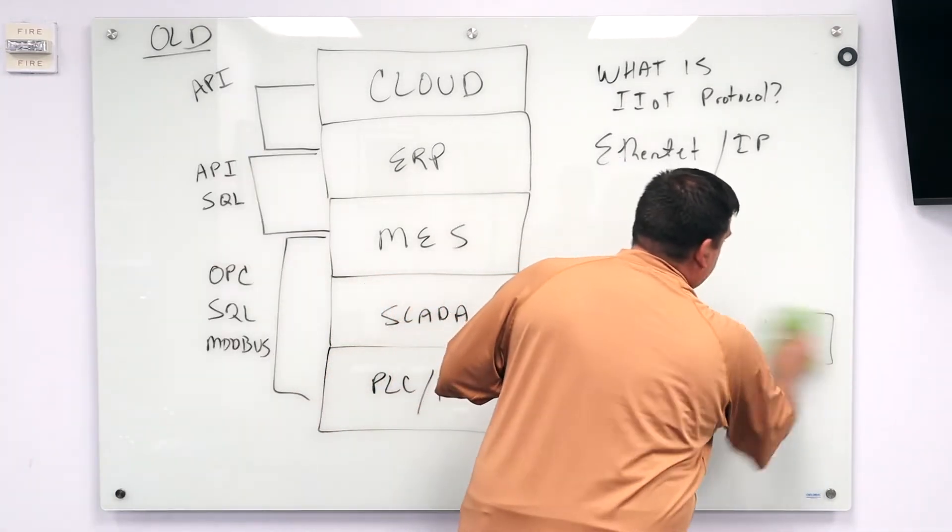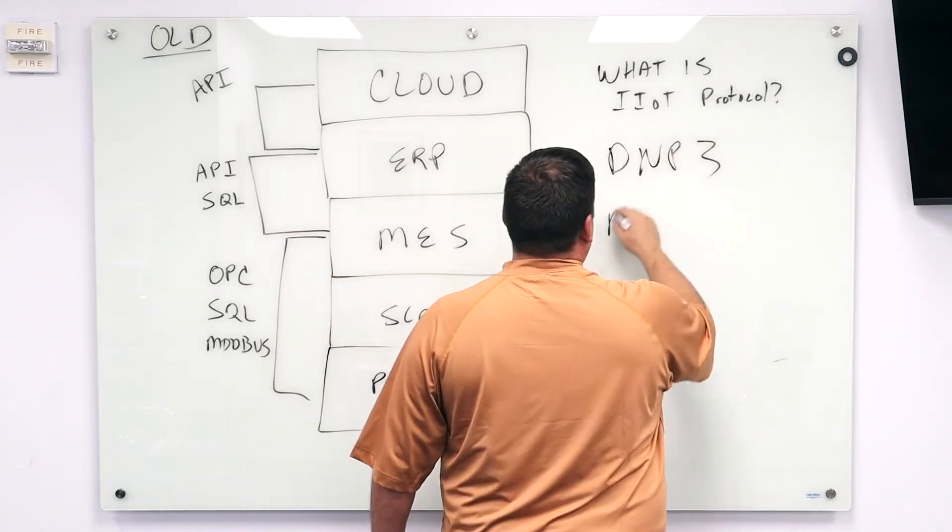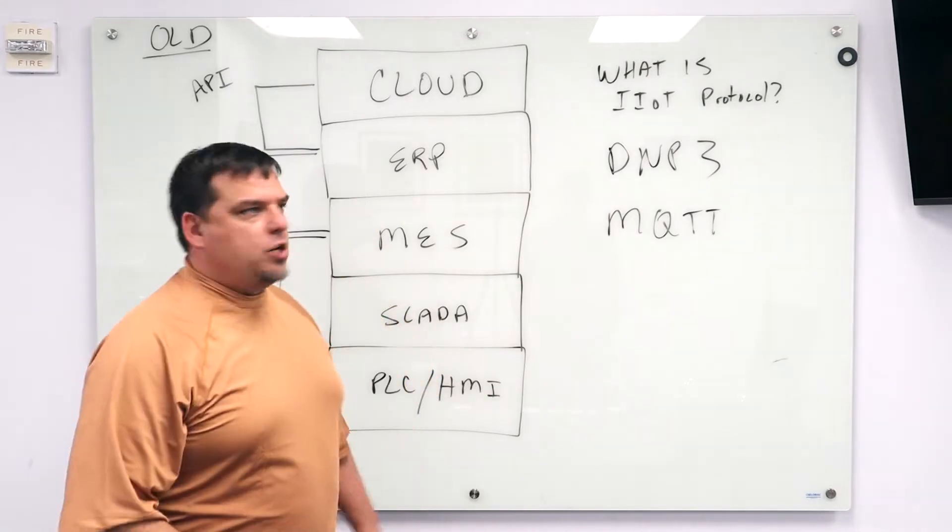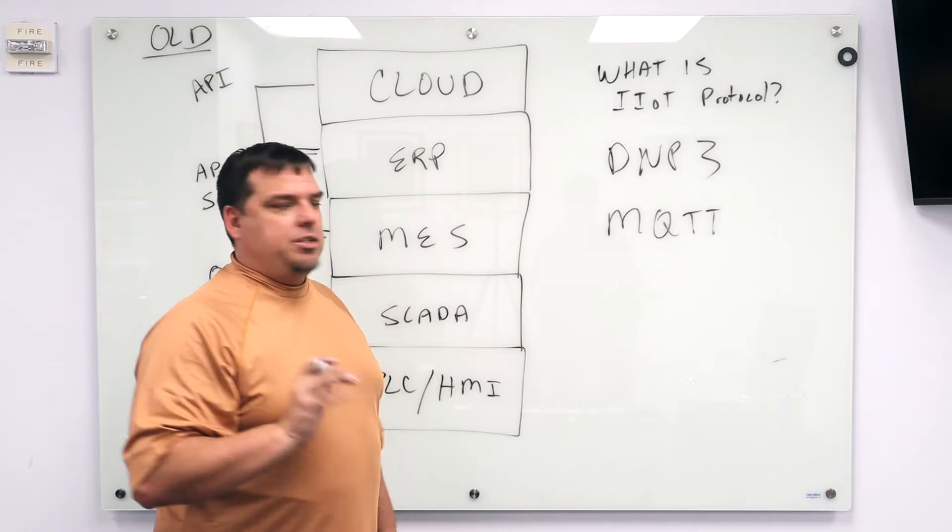The other IIoT protocols are DMP3. There's a bunch of them so people will comment. MQTT. Those are the two big ones. The question is why do you use one or the other? So I'll answer the question about what is MQTT?